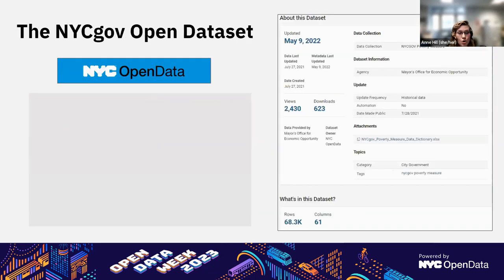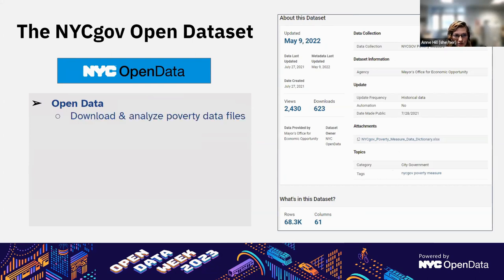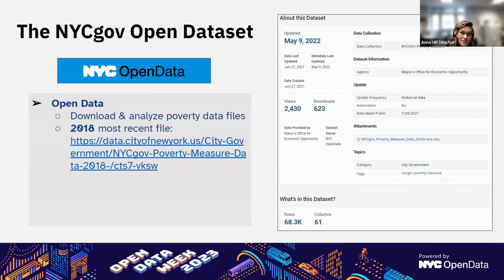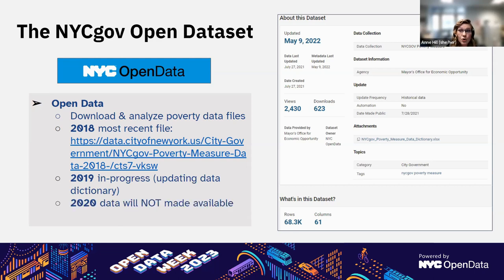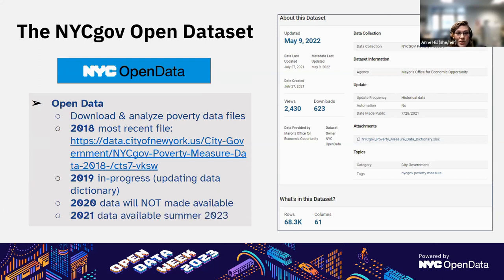Now on to the open data. We usually try to release open data sets in tandem with the report. We're a bit behind on the 2019 data — we're having to update the data dictionary, but it should be available soon. That means 2018 is our most recently available data set, but data are pretty standardized, so everything applies across years. We will not be releasing data for 2020 because the pandemic severely impacted data quality and it's not able to produce reliable estimates beyond the citywide level. However, we will be releasing the 2021 data when we finish the report, hopefully later this summer.